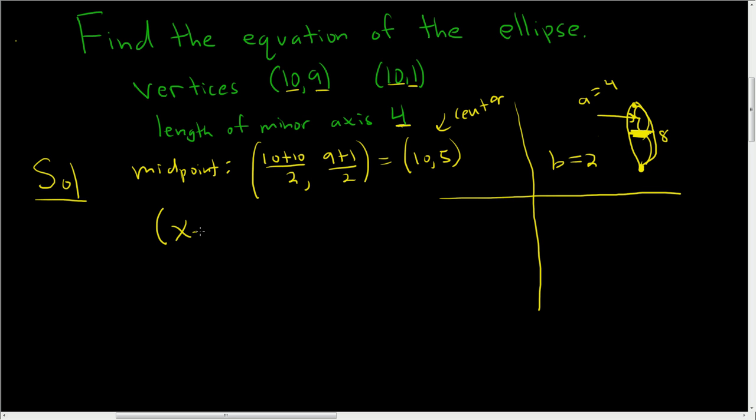This will be x minus h squared over b squared plus y minus k squared over a squared. And I wrote the a squared under the y term because the major axis is vertical. This picture is kind of hard to see. Let me draw it again down here. So here's the center, and then this distance is 2, and this distance is 2. That's how we got the 4. That's how we used 4. We cut it in half.